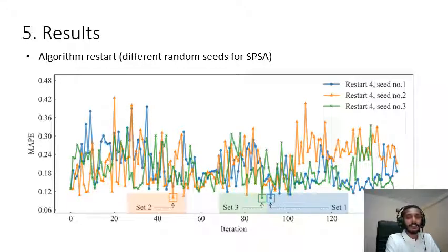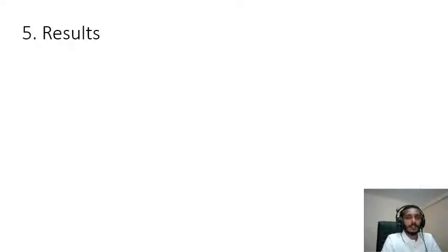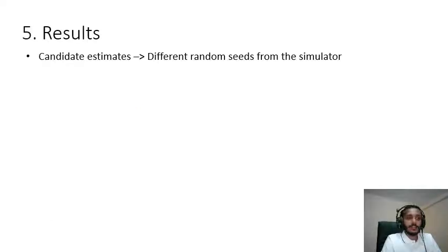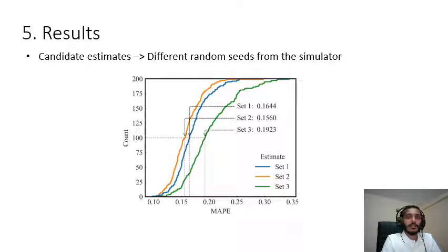We used those candidate estimates in the simulator but this time with different random seeds from the simulator side. We used 200 different random seeds for each candidate set and ran the simulation and captured the mean absolute percentage error value. As you can see in the plot, the candidate set 2 provided the lowest median error. Therefore in general we can identify this as the best set of estimates that closely represent the traffic behavior.